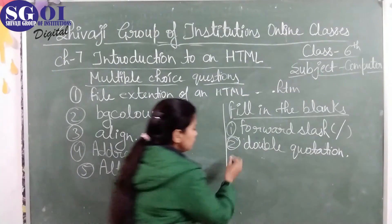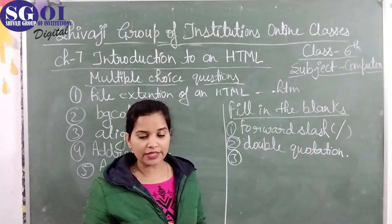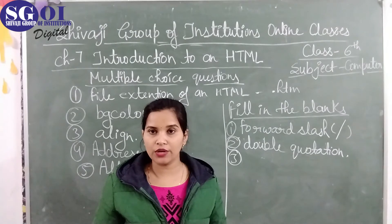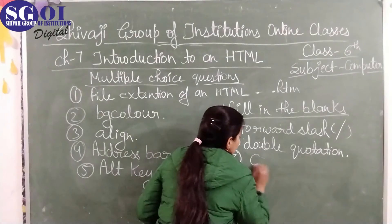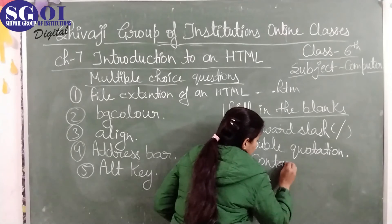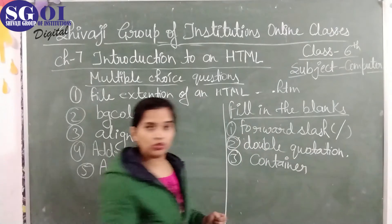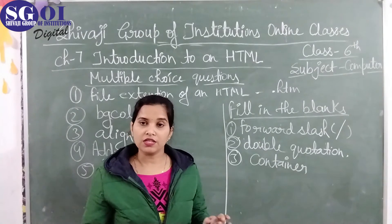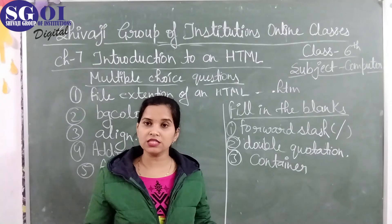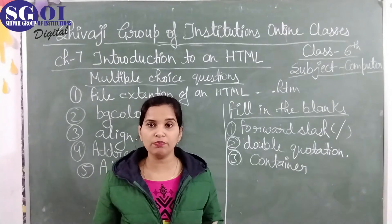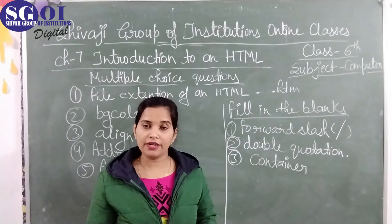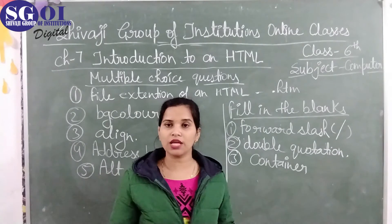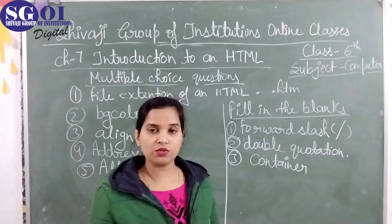Third fill-in-the-blank: elements that exist in pairs are called container elements. There are two types of elements: container and empty. Container elements have both an opening and closing tag — they exist in pairs. Empty elements do not exist in pairs; they only have an opening tag and no closing tag.